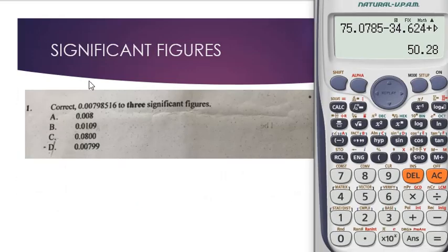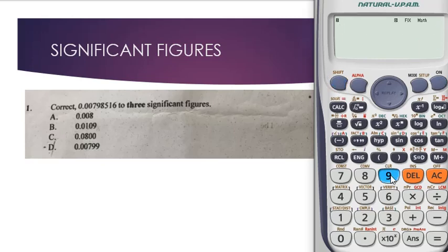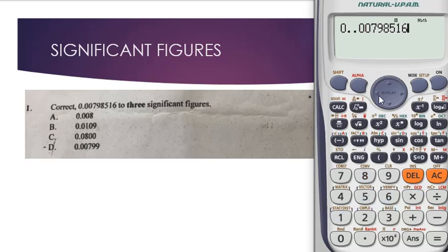Now let's move from decimal places to significant figures. This section is very short so you can understand the concept. We have to correct a value to three significant figures. Let's clear the calculator first by clicking Shift, 9, 3, equals, then AC. Now let's punch in the value: 0.00798516.